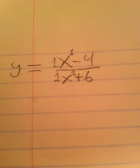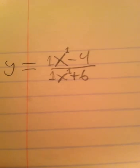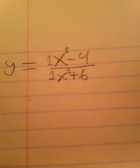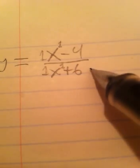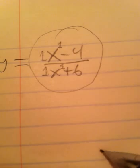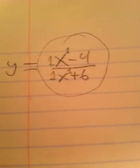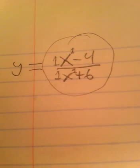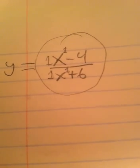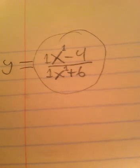Now, as x gets really, really, really big, it's going to get closer and closer to 1. This value right here, or the y value, is going to get closer and closer to 1, but it's never really going to reach 1. It's always going to be that tiny little bit shy of 1.